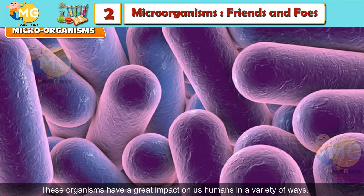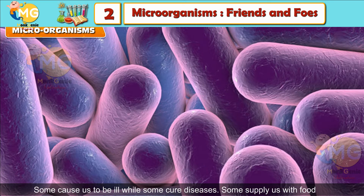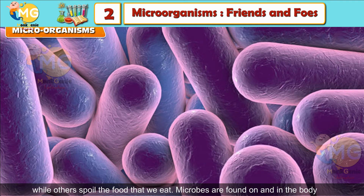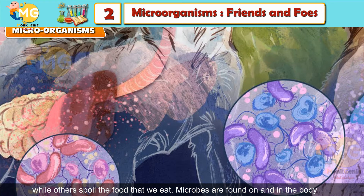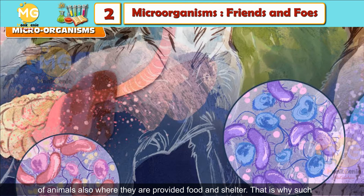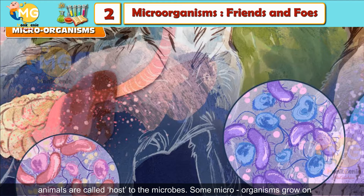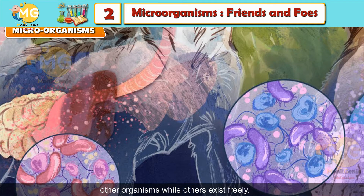Micro-organisms have a great impact on us humans in a variety of ways. Some cause us to be ill, while some cure diseases. Some supply us with food, while others spoil the food that we eat. Microbes are found on and in the body of animals also, where they are provided food and shelter. That is why such animals are called hosts to the microbes. Some micro-organisms grow on other organisms, while others exist freely.